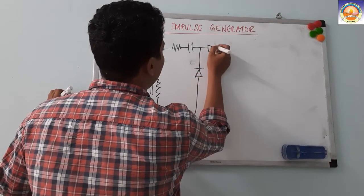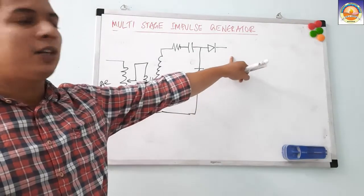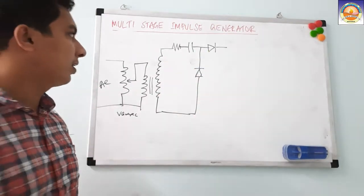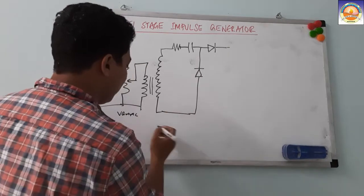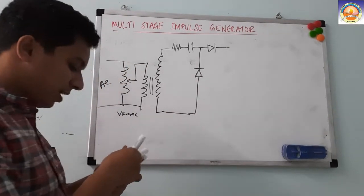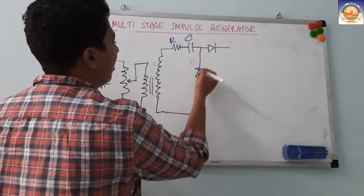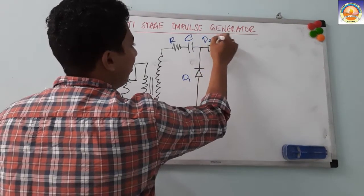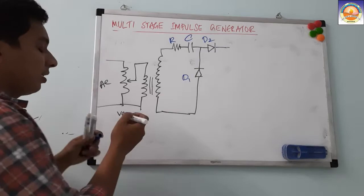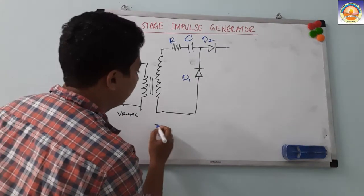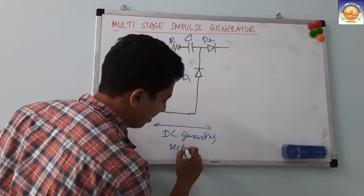The Cockroft-Walton circuit is a single-stage voltage doubler — whatever voltage comes in, you get 2V at the output. This entire section up to this point is called the DC generating section. Here we achieve high voltage DC.